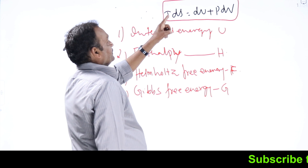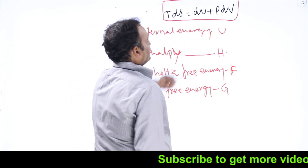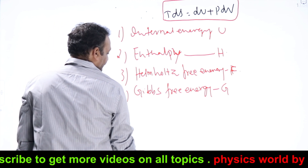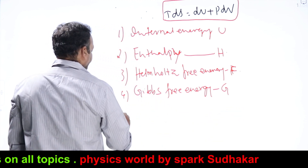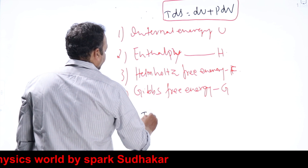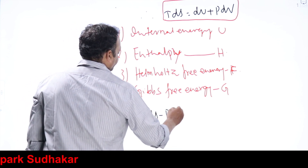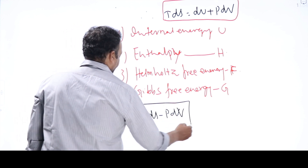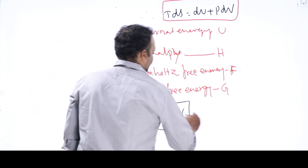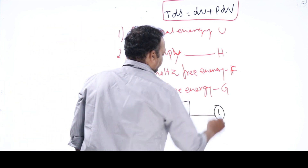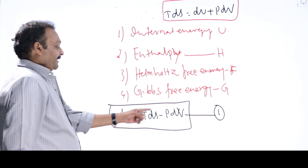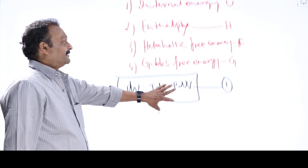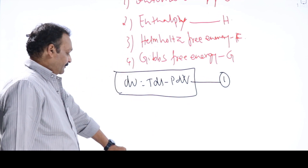According to the combination of first and second laws, T dS equals dU plus P dV. From that equation, dU equals T dS minus P dV. This is the governing equation for changes in internal energy — I'll take it as equation 1. dU equal to T dS minus P dV is the governing equation for the change in internal energy, which I am defining as a thermodynamic potential.